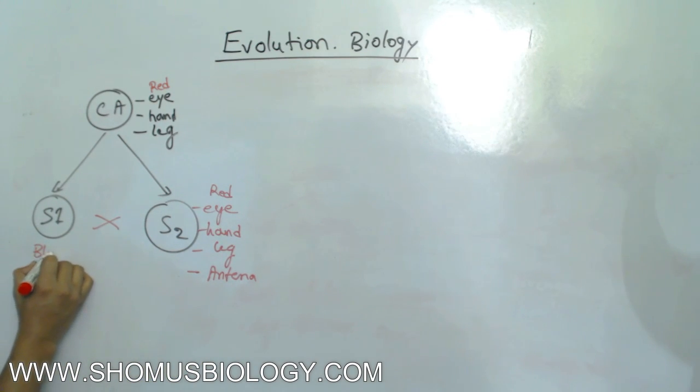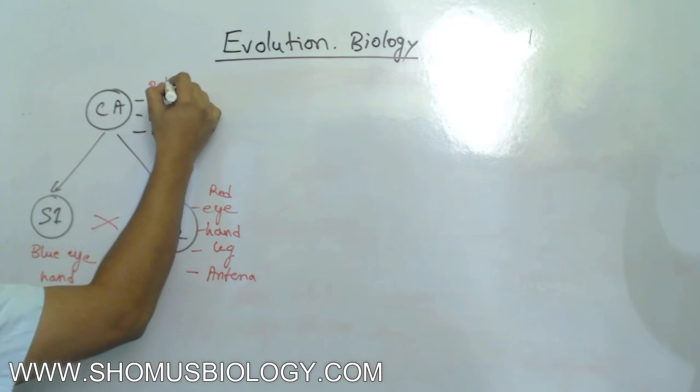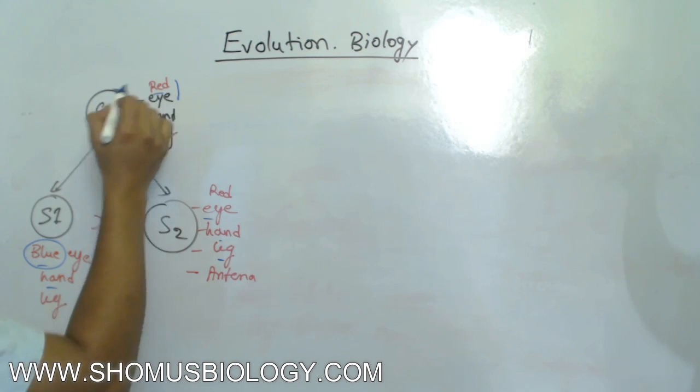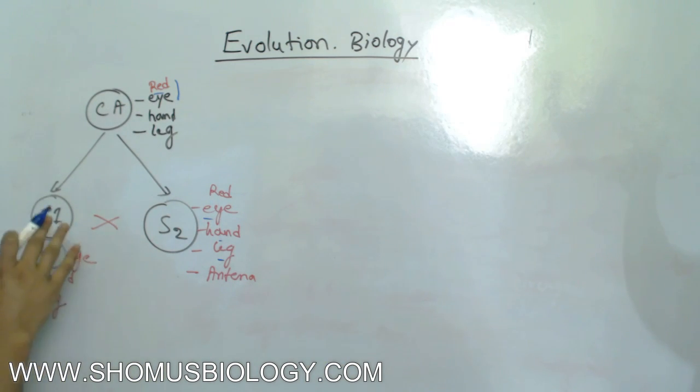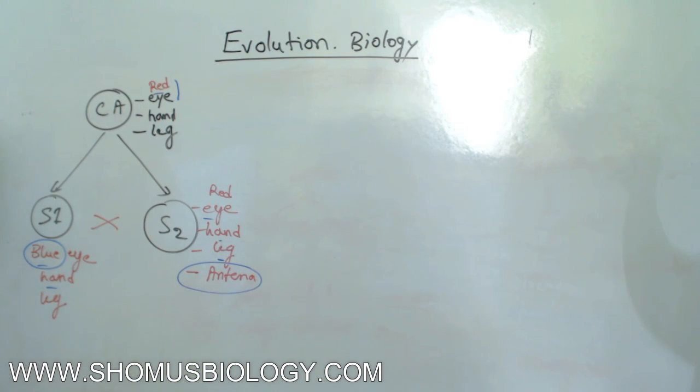In S1 it has blue eye, it has hand, it has leg. Why are we calling them two different species? Because the common ancestor has red eye, hand, and leg. If you compare S1 and S2, all of them have eye, hand, and leg. But in S1 it has blue eye instead of red eye, so something is unique to S1. S2 also has red eye, hand, and leg, but it has a totally new property of the antenna which is unique for S2. This is the general idea of evolution for S1 and S2. They share a common ancestor, so you will find similarity between S1 and S2, but differences between them as well.